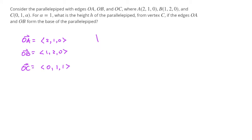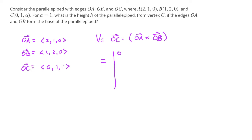The volume of that parallelepiped is going to be the scalar triple product: vector OC dotted with the cross product of OA and OB. This gives us a 3x3 determinant with OC being ⟨0, 1, 1⟩, OA being ⟨2, 1, 0⟩, and OB being ⟨1, 2, 0⟩.